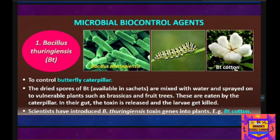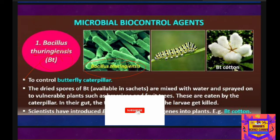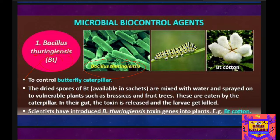We are mainly concentrating on microbes which can be utilized as biocontrol agents. One of the main examples is Bacillus thuringiensis, otherwise known as Bt — a bacterium used as a biocontrol agent. Bacillus thuringiensis is used to control a wide range of insects, especially butterfly caterpillars, which cause different problems by vigorously eating the leaves of plants.